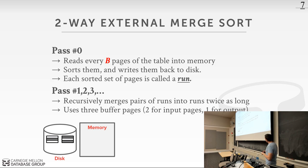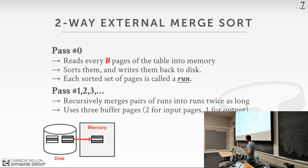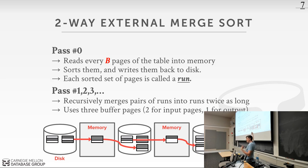For this algorithm we only need three buffer pool pages: two pages for the input runs and one page for the output, because we always have to write it out. At a high level: fetch the first page, sort it, write it back to disk. Fetch the next page, sort it, write it to disk. Then fetch the two pages together and combine them to make the output pages.